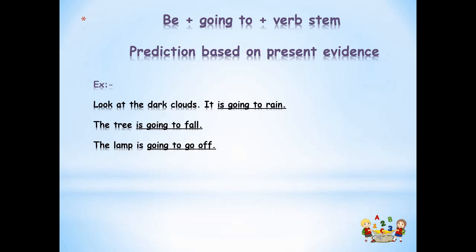'It is going to rain.' We have used is going to plus the verb stem to predict a future happening. Let's look at another one: 'The tree is going to fall.' You can see some evidence — maybe the tree is old and you can shake it, so you predict the tree is going to fall. Another example: 'The lamp is going to go off.' When we say the lamp is going to go off, we can see the flame is fading, so you can tell that the lamp is going to go off.